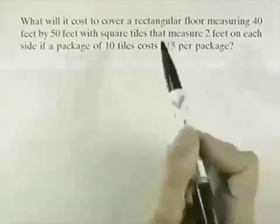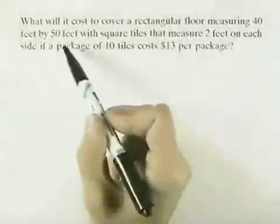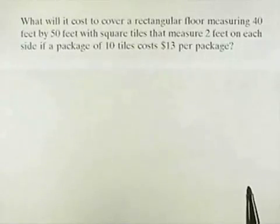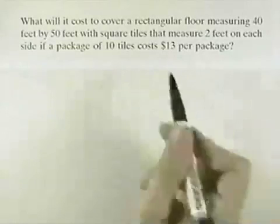What will it cost to cover a rectangular floor measuring 40 feet by 50 feet with square tiles that measure 2 feet on each side if a package of 10 tiles costs $13 per package?